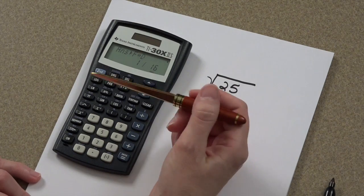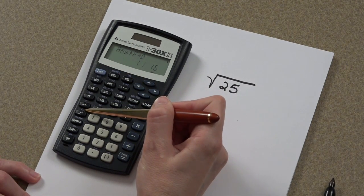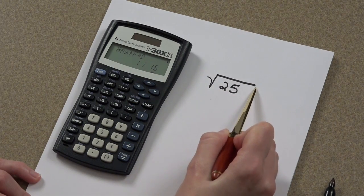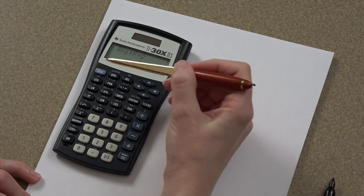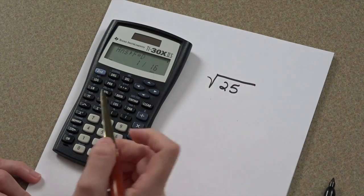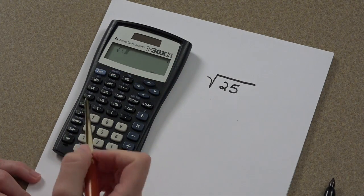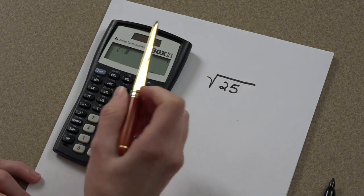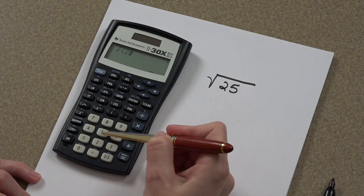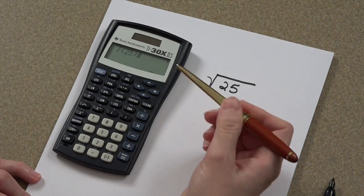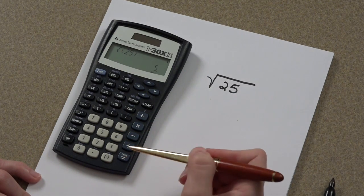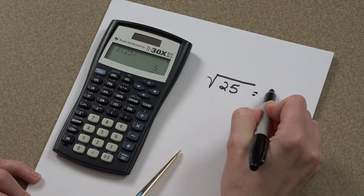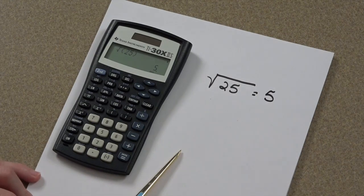The square root command is sitting right above your squared command. So, if you want to find the square root of 25, you'll press the second key and your squared button, look at the parenthesis. I'll come back to that in a moment. 25, close your parenthesis, and press equal. The square root of 25 is 5.